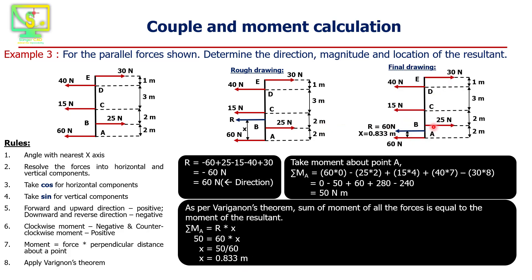So this resultant of 60 newtons is acting at a distance of 0.833 meters from point A.